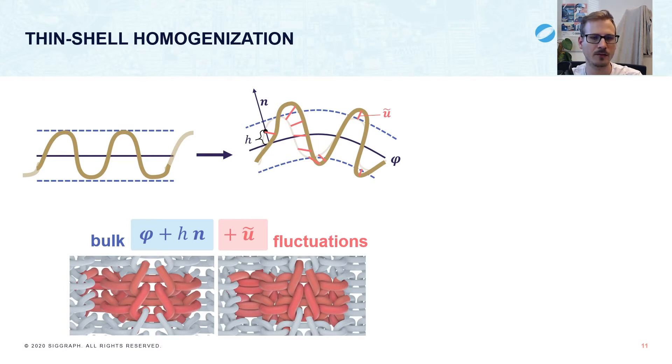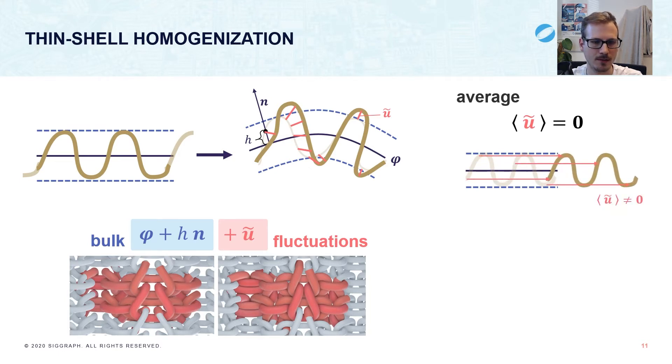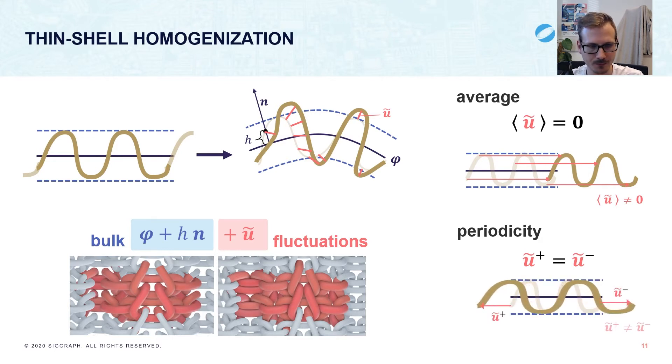Therefore, it is necessary to also introduce constraints on the fluctuation field that should preserve the macro deformation on average. In essence, there are two constraints. The first is simply constraining the average of U-tilde to be 0, which prohibits that the yarns would just slide away. The second is periodic boundary conditions, where fluctuations on opposite boundaries denoted by plus and minus should be equal. For example, this prohibits that U-tilde allows overall stretching.